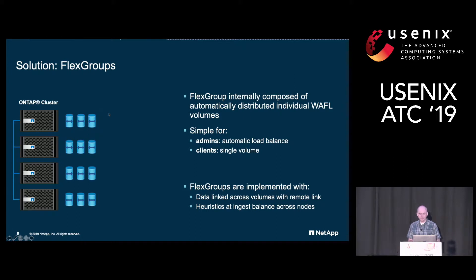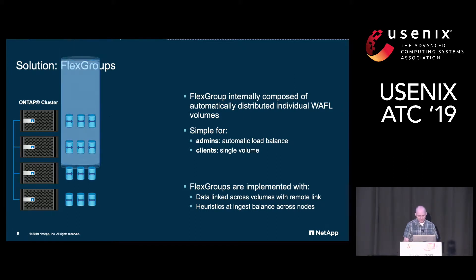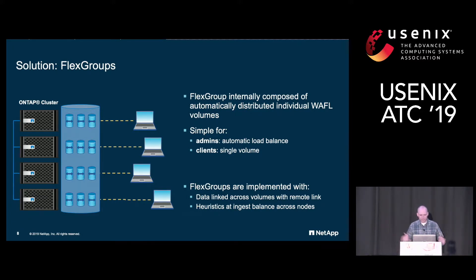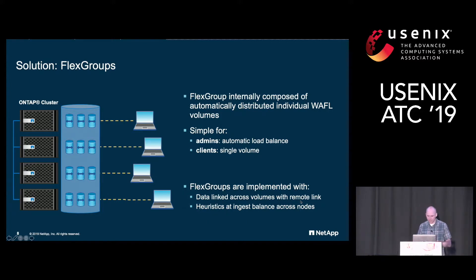This is how we came to Flex Groups. We evolved ONTAP cluster to stitch together Waffle volumes automatically, making things simple for admins through automatic placement that balances the cluster, and simple for clients who can still see a single mount point that can be mounted from any cluster member. Requests can still come into any node and be routed, and every request will either be satisfied by the local node or a node one hop away. This required two mechanisms: remote links that allow us to spread usage across cluster volumes, and heuristics to guide when a remote link should be created and where it should lead to.